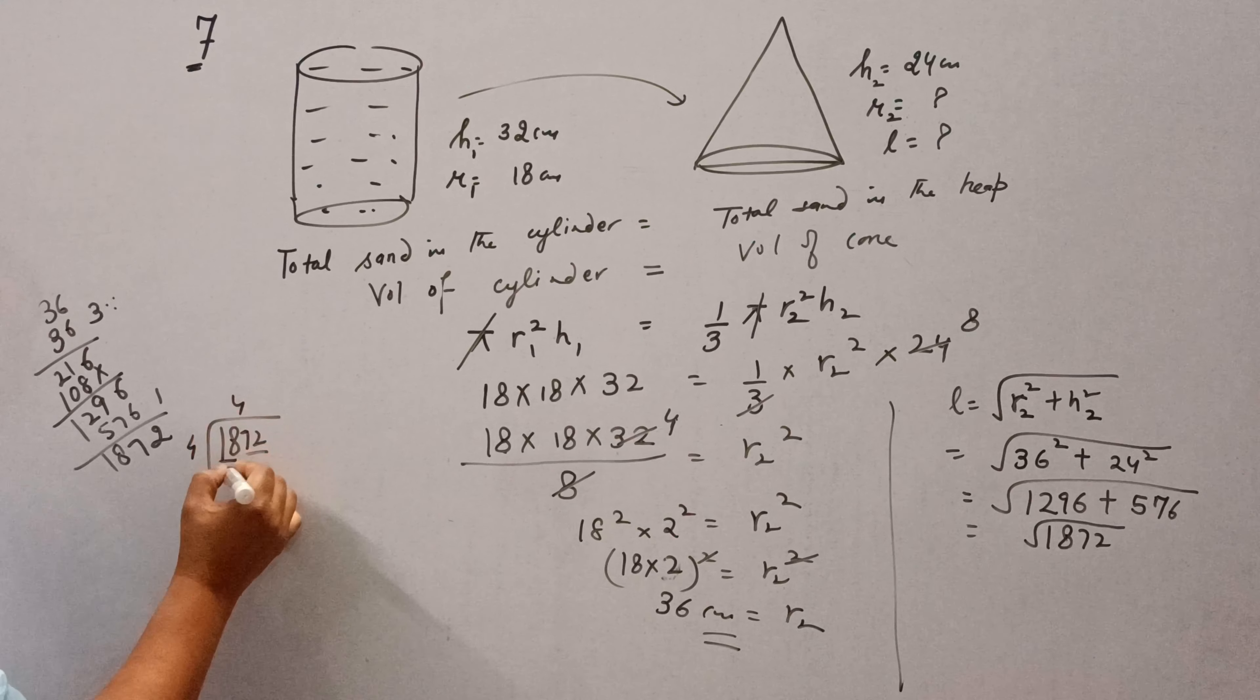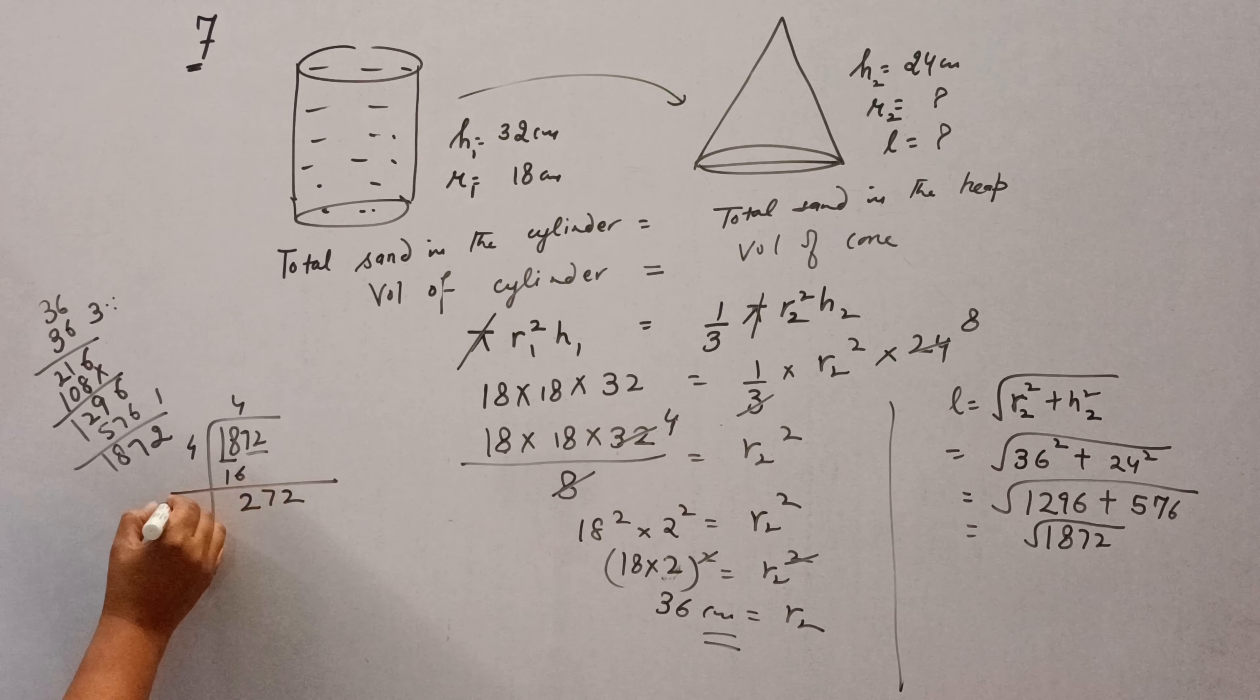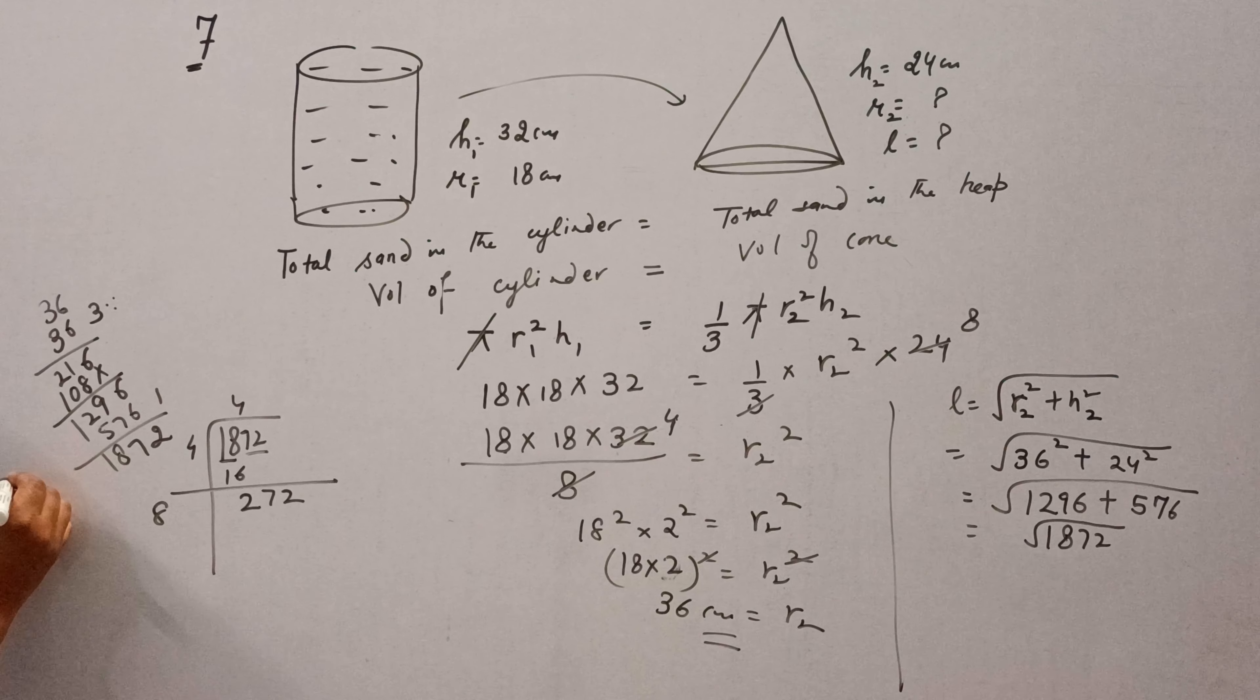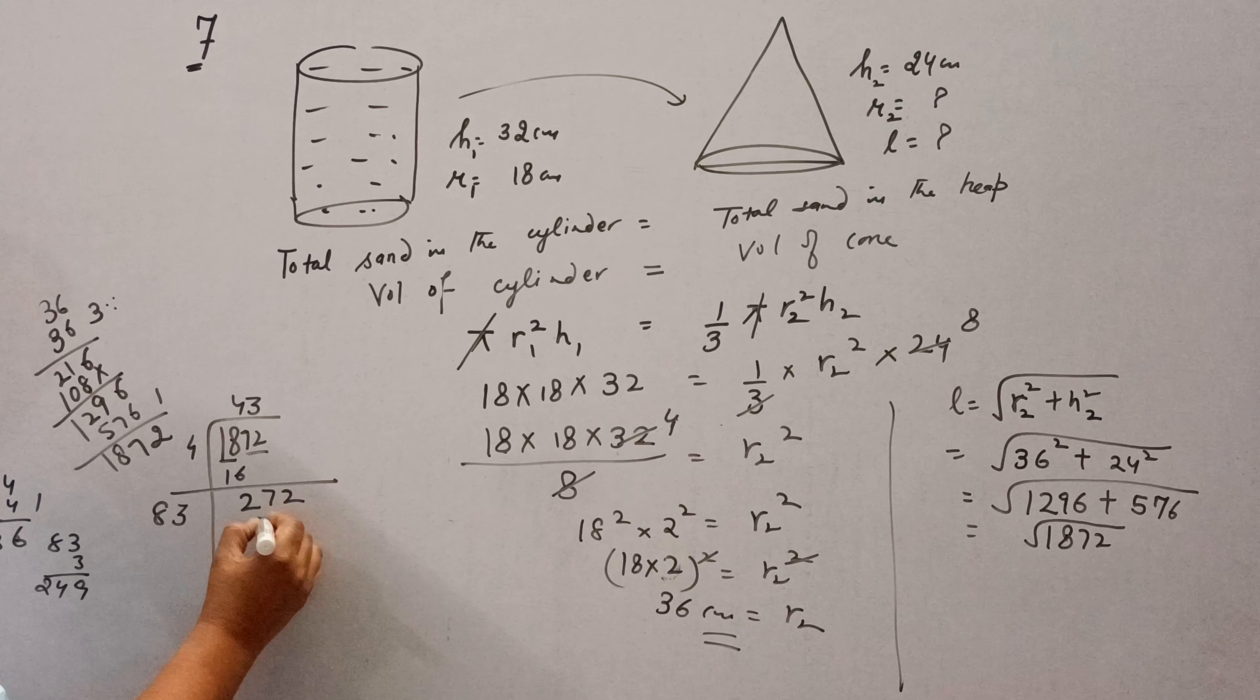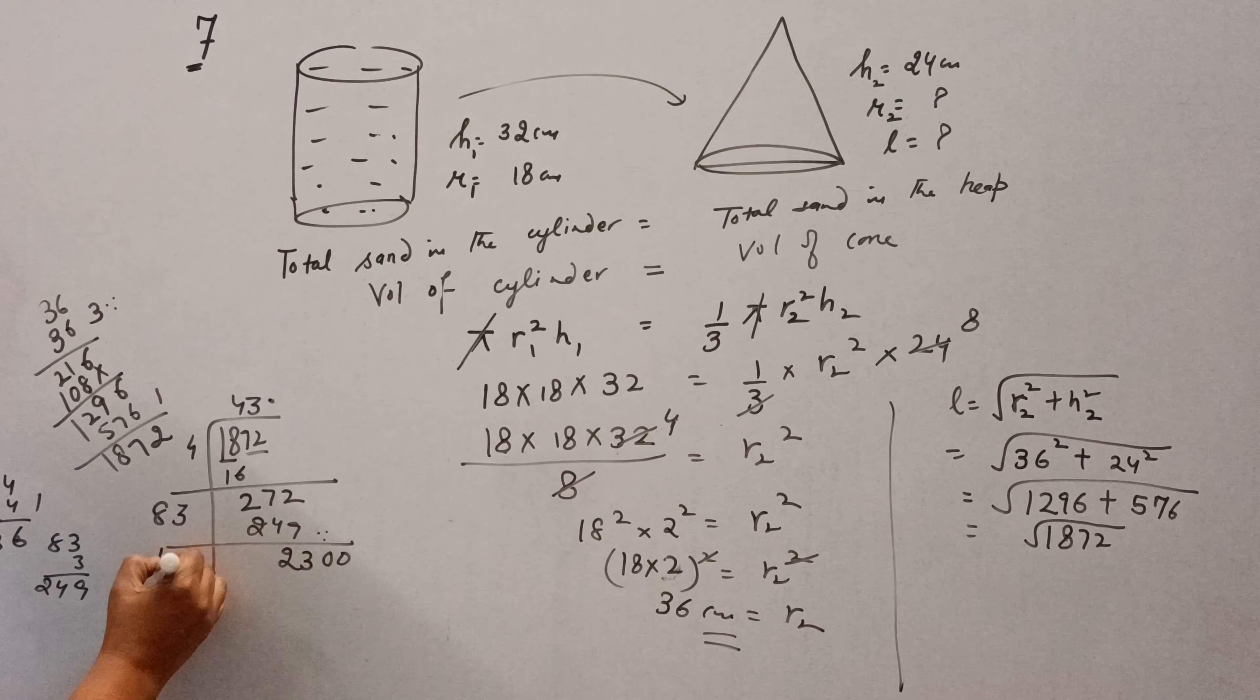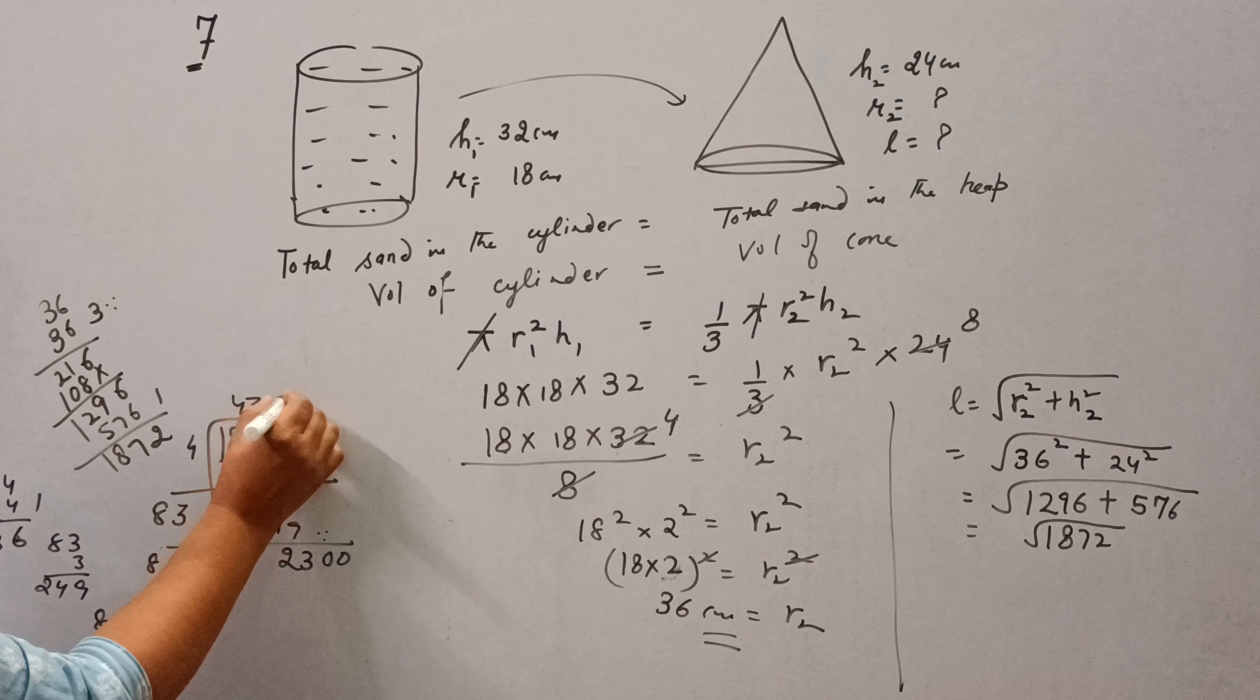Now find the slant height, square root of 1872. It will be 4 fours are 16. Then 3, 3s are 9. We get 43. We will put decimal. 86 divided by 86 gives 43.2 centimeter.